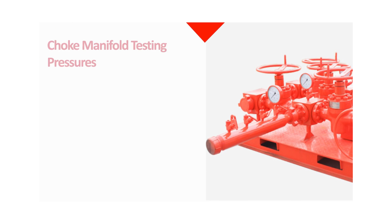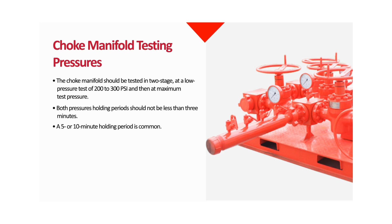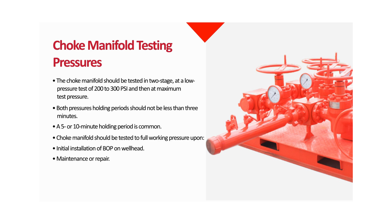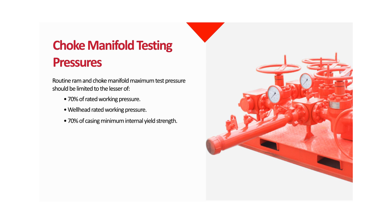The choke manifold should be tested in two stages: at a low pressure test of 200 to 300 PSI and then at maximum test pressure. Both pressure holding periods should not be less than 3 minutes; a 5 or 10 minute holding period is common. The choke manifold should be tested to full working pressure upon initial installation of BOP on wellhead, and after maintenance or repair — only test the affected components. Routine RAM and choke manifold maximum test pressure should be limited to the lesser of 70% of rated working pressure, wellhead rated working pressure, or 70% of casing minimum internal yield strength.